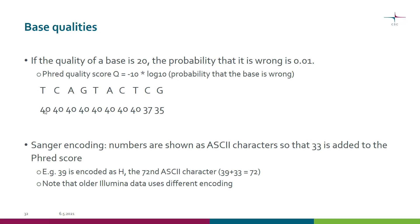Rather than listing these numbers directly in the FASTQ file, we convert them to ASCII characters in order to save space. This is called Sanger encoding. We add the number 33 to each score and then take the matching ASCII character to put in the file. For example, if a base had a PHRED score of 39, we would add 33 to get 72, and then take the 72nd ASCII character, which happens to be capital H.